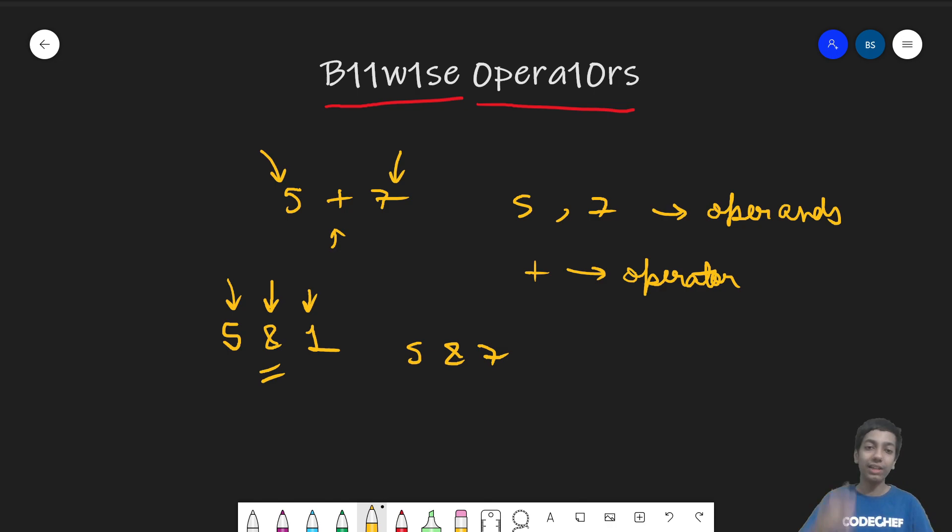So this means that it will work bitwise. And basically plus, minus, divide, all of them have some properties. Like the plus adds the two numbers, multiply multiplies the two numbers and they work in a peculiar way. So similarly, each of the bitwise operators has its own attributes as well.